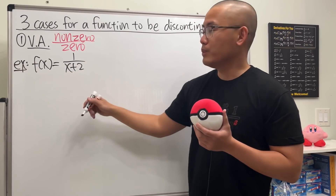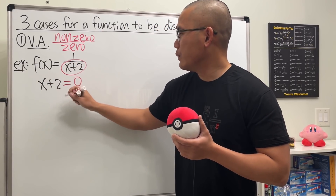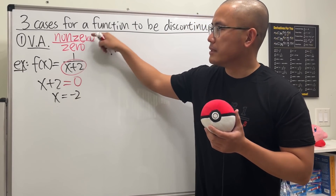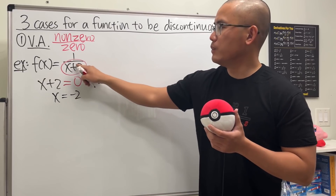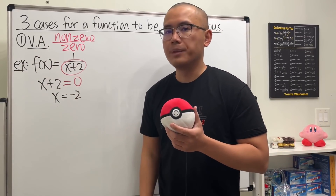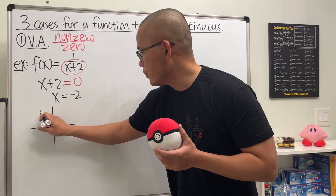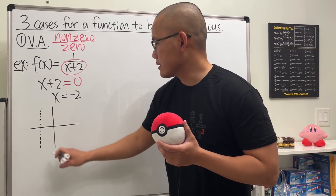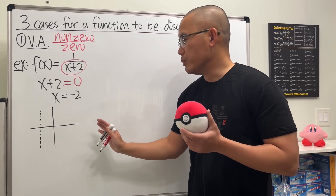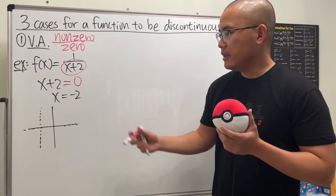We set the bottom equal to zero and solve, getting x equals negative two. When x equals negative two, the top is non-zero and the bottom equals zero — we end up with a vertical asymptote there. Here's the picture: we have negative two as the vertical asymptote, and this is just the classic graph of one over x shifted two units to the left.